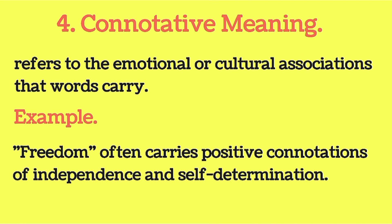The next type of meaning is connotative meaning. Connotative meaning refers to the emotional or cultural associations that words carry. For example, the word 'freedom' often carries positive connotations of independence and self-determination. So this kind of meaning is called connotative meaning.